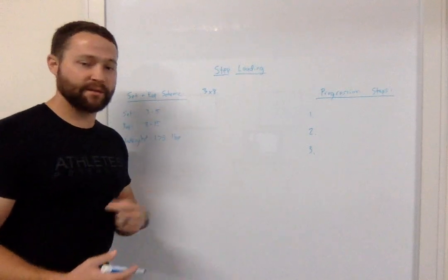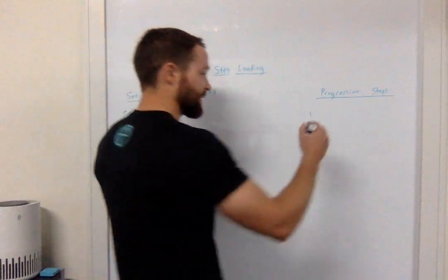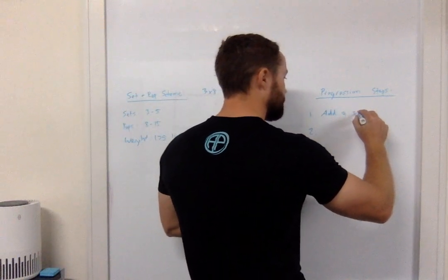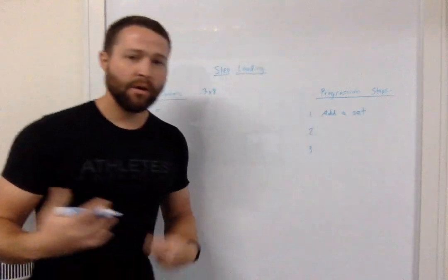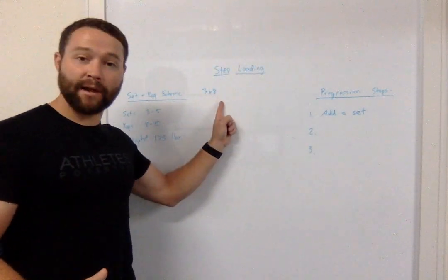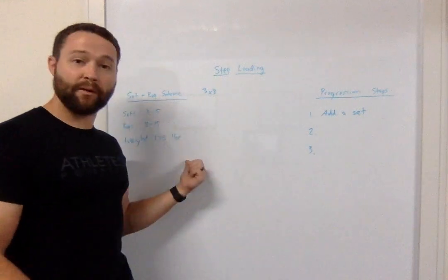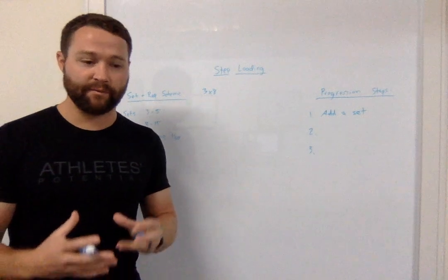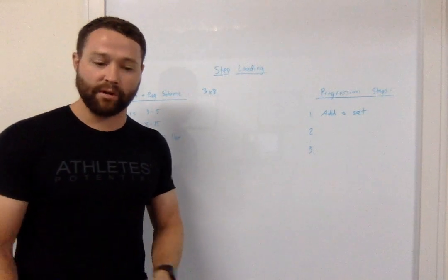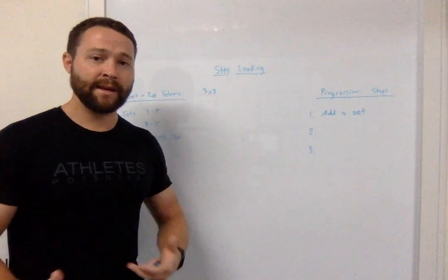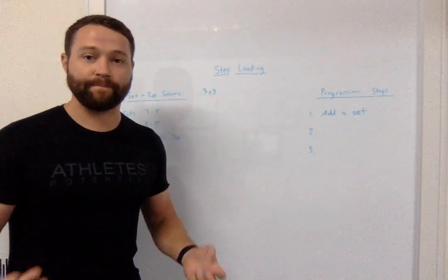So the easiest way to progress with this is I'm going to add a set. Now why add a set? Because you already know that you're able to do eight reps with this amount of weight. An easy way to progress that is simply to just take the same amount of rest that you've taken before and just tack on another set at the end. This ensures that the tissue is able to handle it and that you'll be able to do it safely.